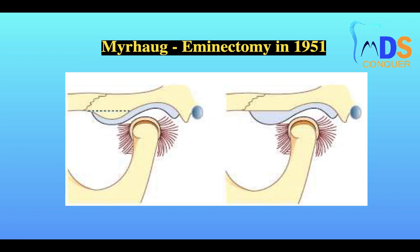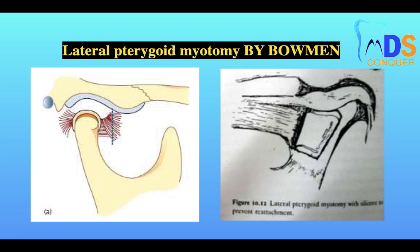Myrhaug's eminectomy, proposed in 1951, involves cutting and removing the articular eminence so that when the condyle moves out of the fossa, it can passively return into the fossa.